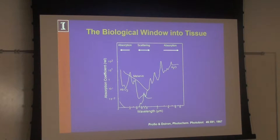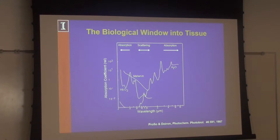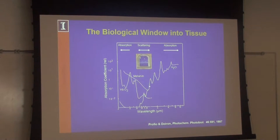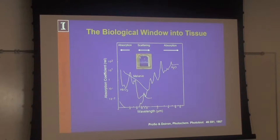This is a really important graph that sets the stage for all of biomedical optics. It looks at the absorption coefficient versus wavelength and the primary absorbers in tissue. If we're trying to image deep into tissue, we want to avoid wavelengths that are strongly absorbed. There is a region in the near-infrared wavelengths considered the biological window in tissue — roughly 750 to 1350 nm — where absorption is at a minimum. Attenuation of light through tissue is governed largely by scattering, not absorption. Those are the wavelengths we prefer for OCT.